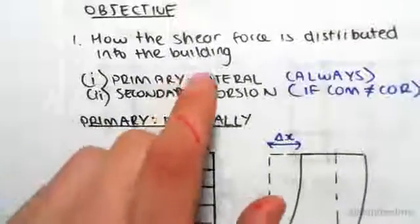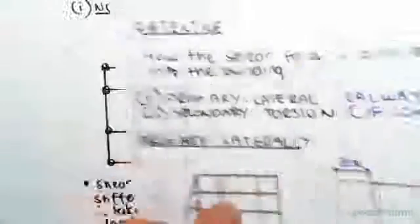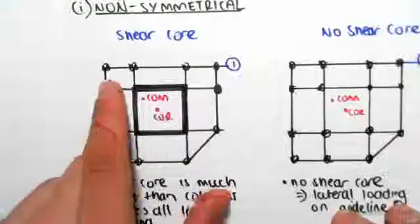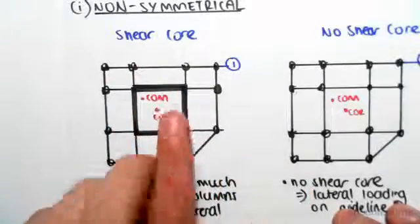So in our structure, there's lateral and torsion—there's both of them. But along grid line one, there's only torsion, there's no lateral loading. So that's one case.